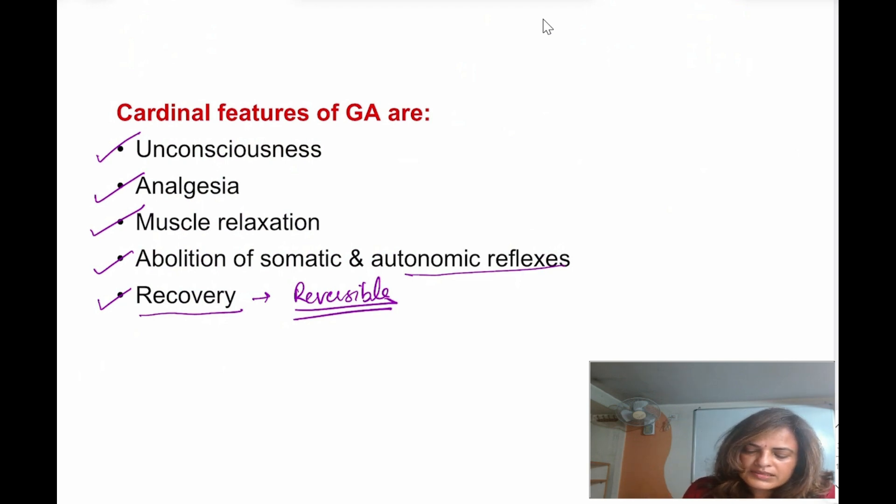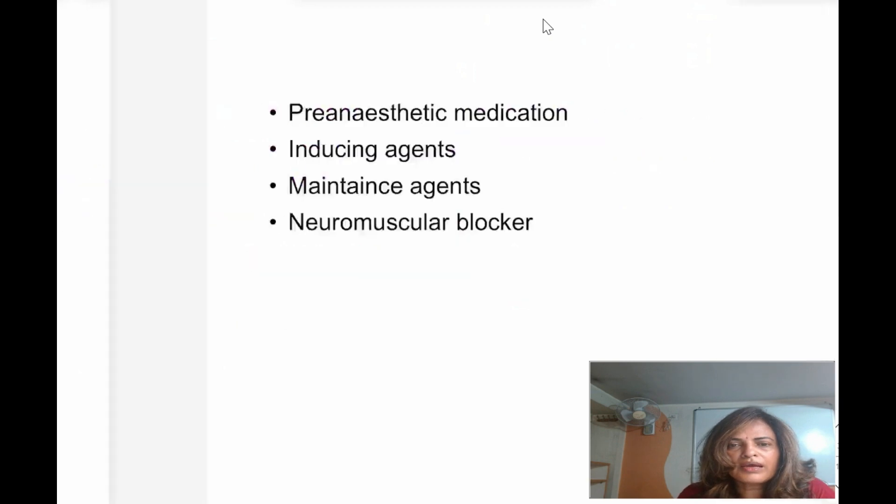Now, all these things - unconsciousness, analgesia, muscle relaxation - they are obtained not by giving just one drug. Different categories of drugs are used to get all these things. What are the different categories of the drug which we are going to use to get all that?